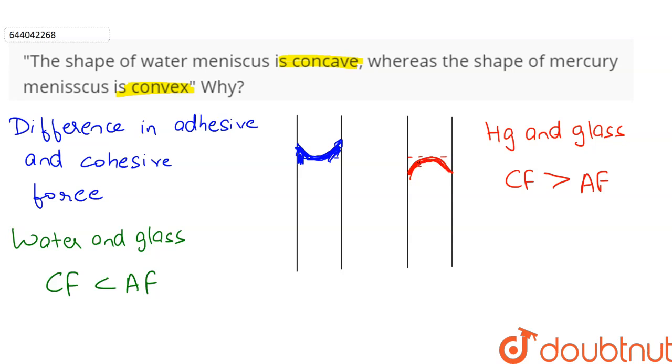The formation of meniscus, either concave or convex, is because of difference in adhesive and cohesive force. In case of water, the cohesive force is less, therefore the glass tube pulls the water upwards, giving us a concave meniscus.